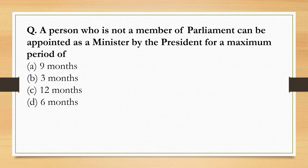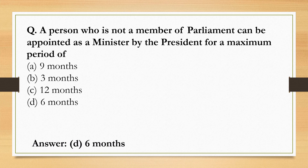A person who is not a member of Parliament can be appointed as a Minister by the President for a maximum period of 6 months — Option D.